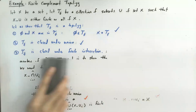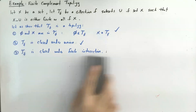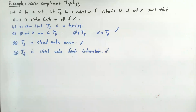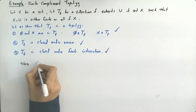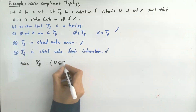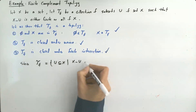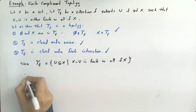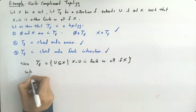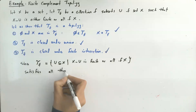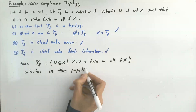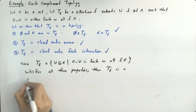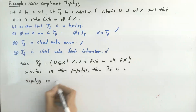Therefore, we proved the last property. Since τ_f — the collection of all subsets of X such that the complement is either finite or all of X — satisfies all three properties, τ_f is a topology on set X.